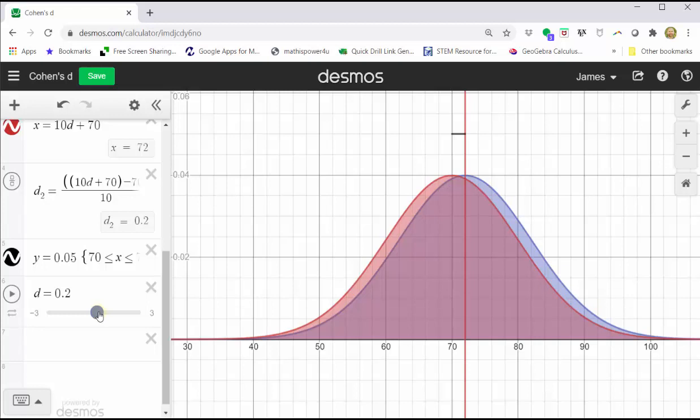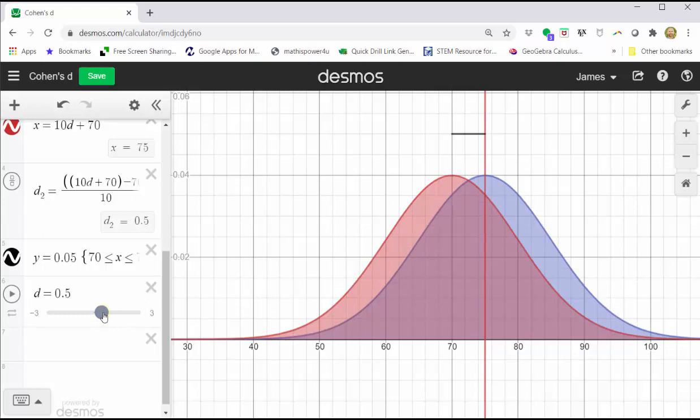If we change d to 0.5, this is considered a medium effect. Notice how the mean has changed from 70 to 75.